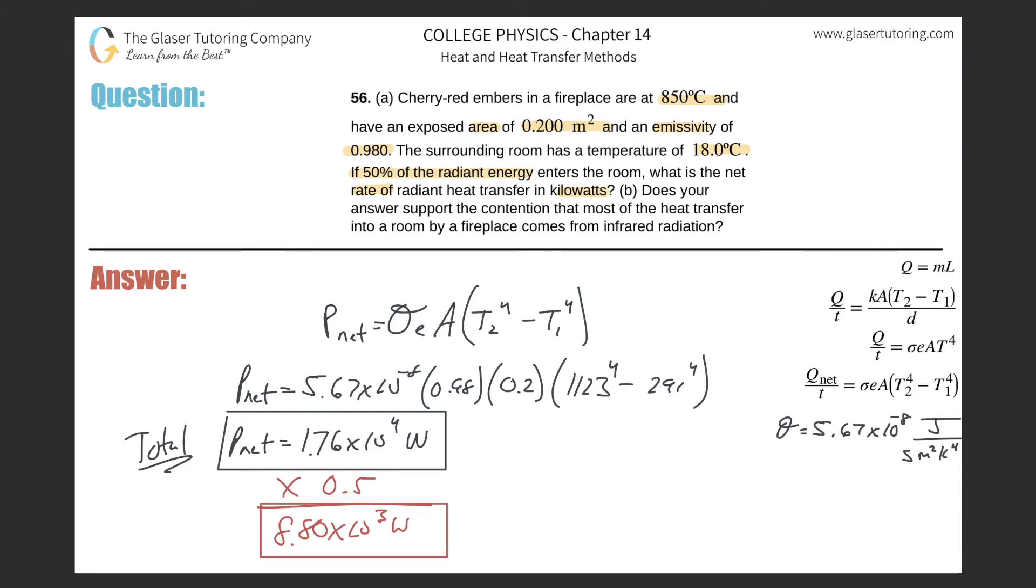And then they wanted to find it in kilowatts. So then we just got to take this value and divide it by 1,000. Or in other words, it works out to be 8.80 kilowatts. And that would be the answer.